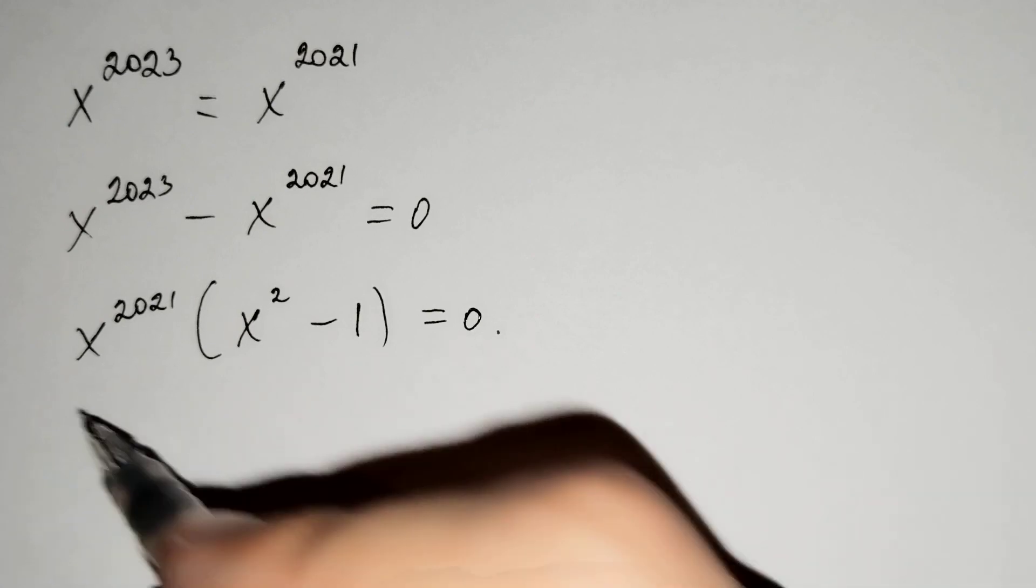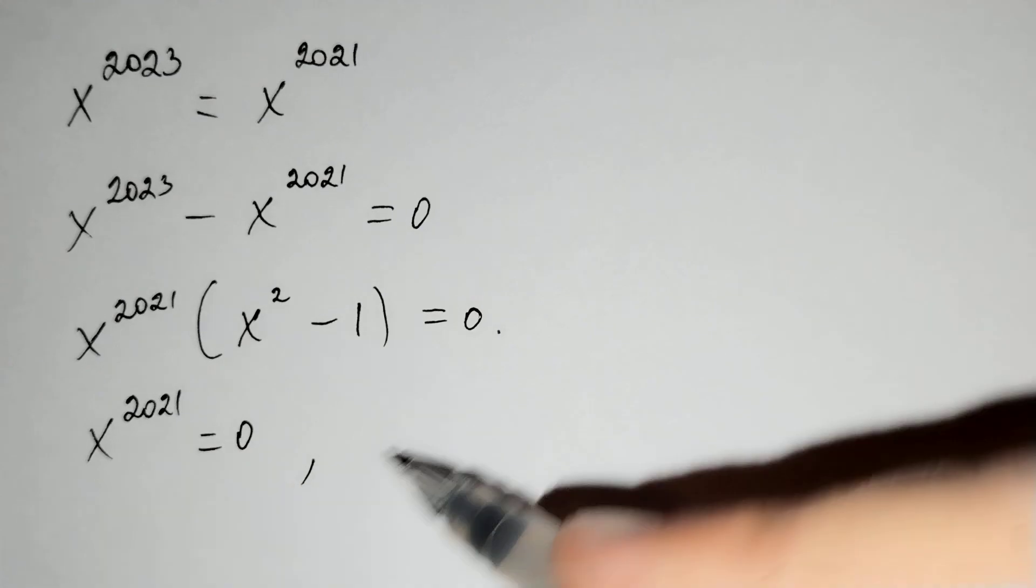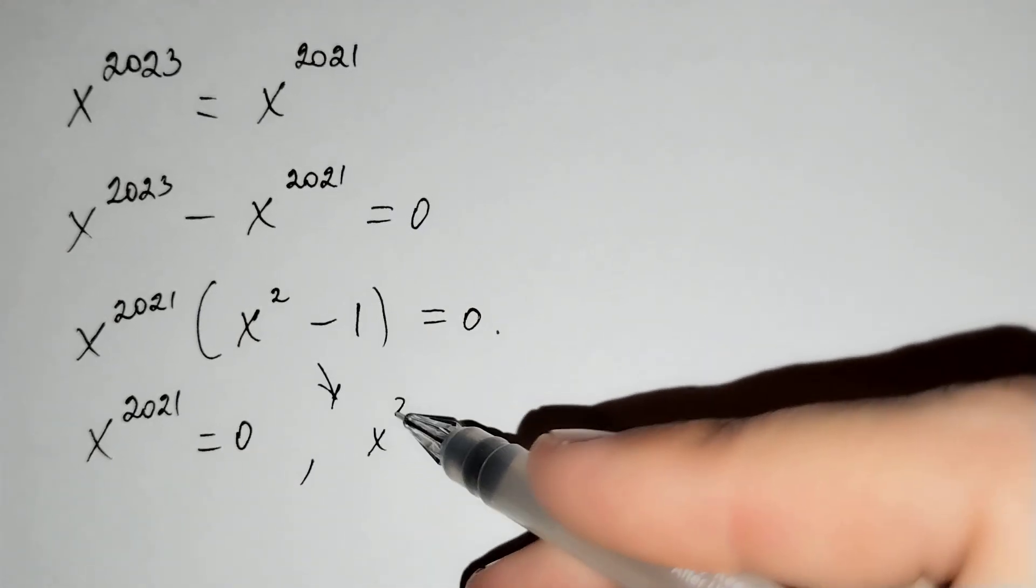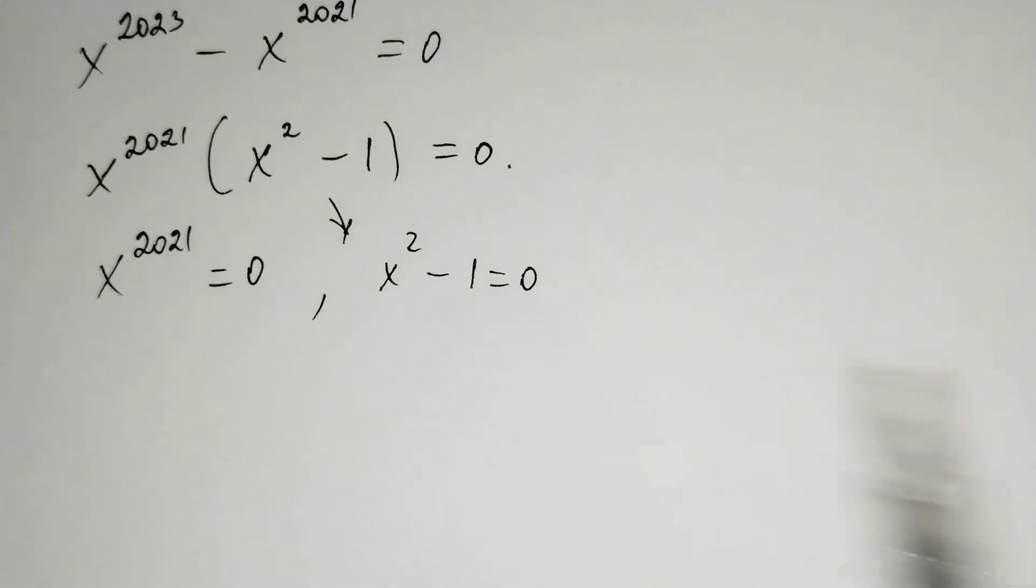Then x power 2021 equals to 0 and this x squared minus 1 equals to 0 from this equation.